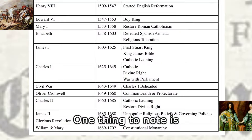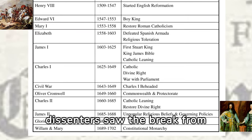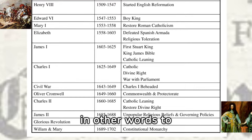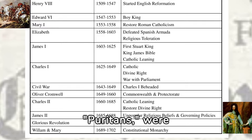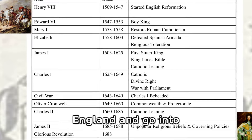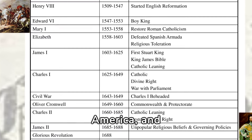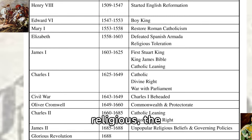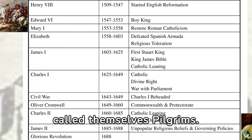One thing to note is that, while Henry remained faithful to Catholic dogma, a number of Protestant dissenters saw the break from the Church as an opportunity to purify the English Church from within — in other words, to make it more Calvinist. These dissenters, called Puritans, were unsuccessful, and by the time of the rule of James I had decided to abandon England and go into exile in Holland. They later applied for a charter to settle in America, and eventually found their way to New England. As their main concern was religious — the establishment of a new covenant polity, a city upon a hill — they called themselves Pilgrims.